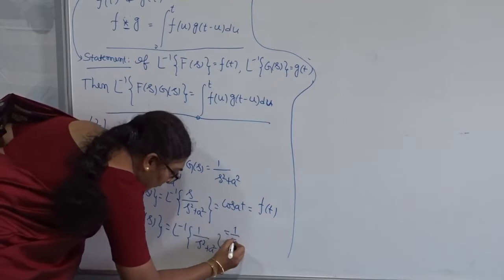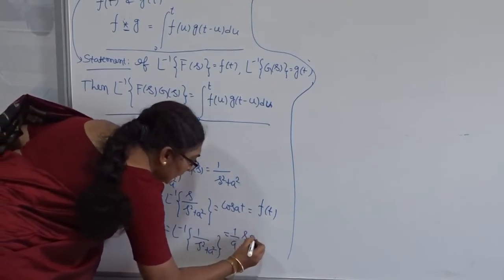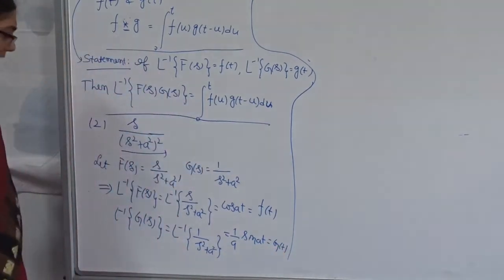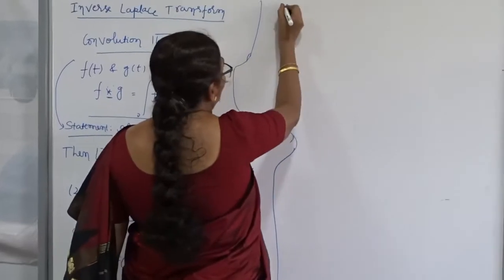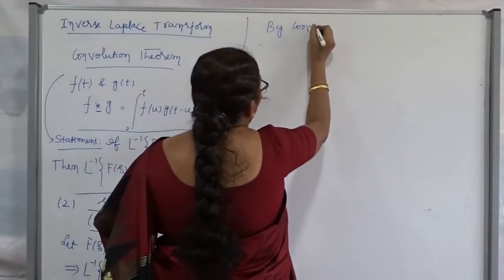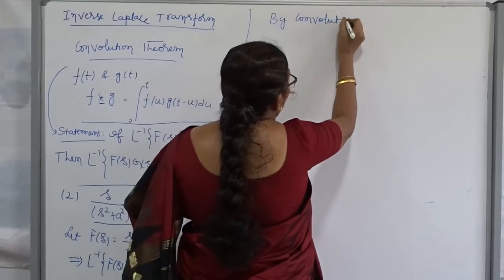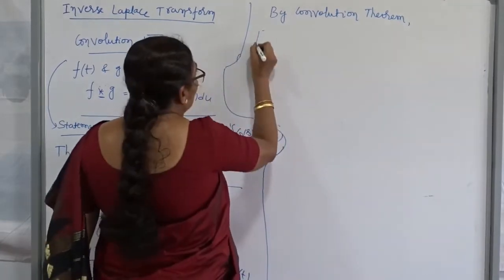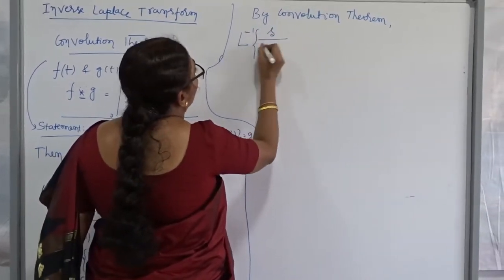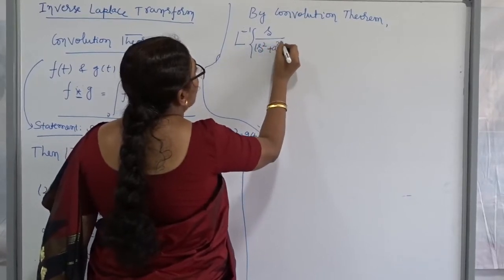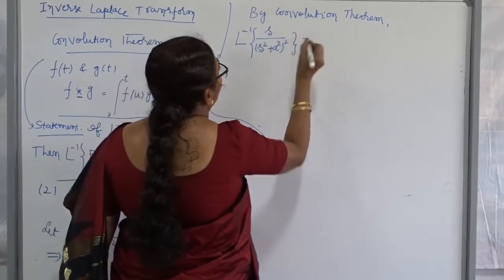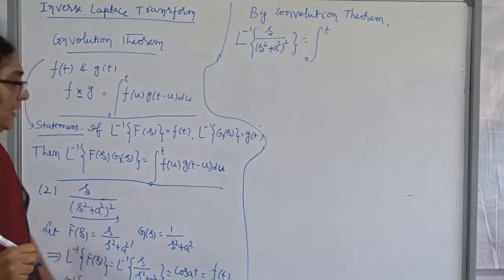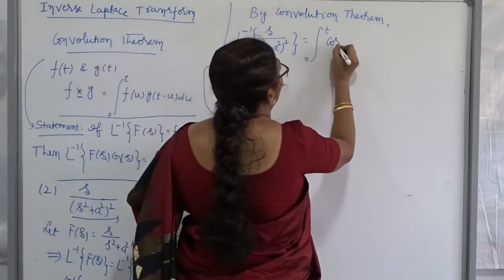Which constant is missing? It is 'a', therefore multiplied by 1/a, giving (1/a)sin(at), and that is my g(t). By the convolution theorem, the inverse Laplace of S/(S² + a²)² is the integral from 0 to t of f(u) times g(t − u) du. What is my f(t)? It is cos(at), so f(u) = cos(au).